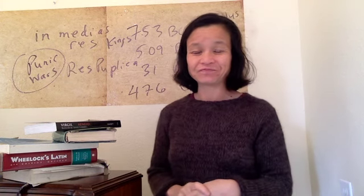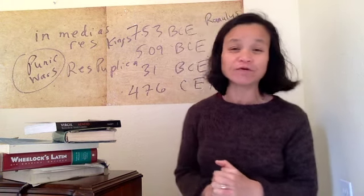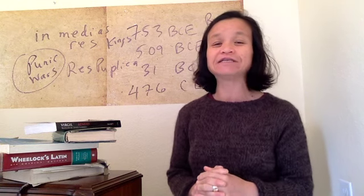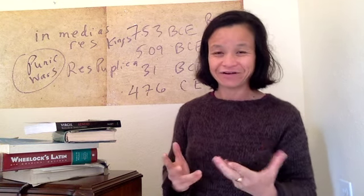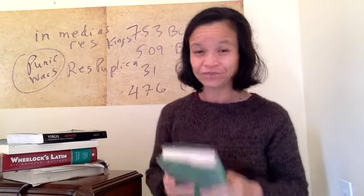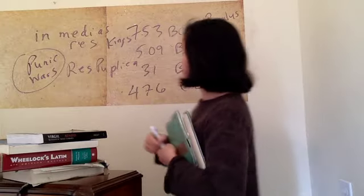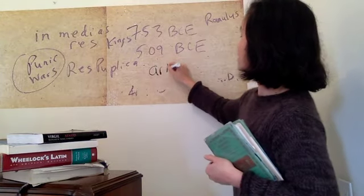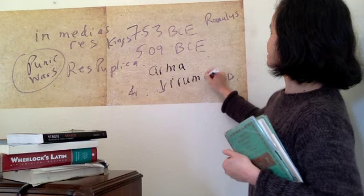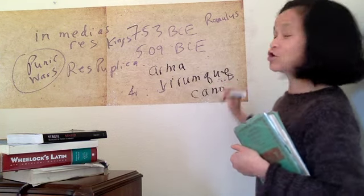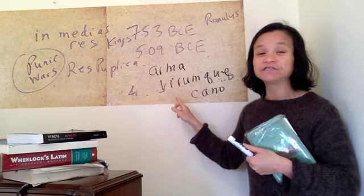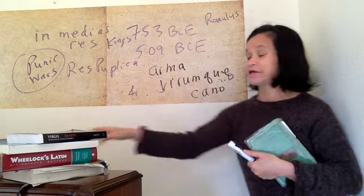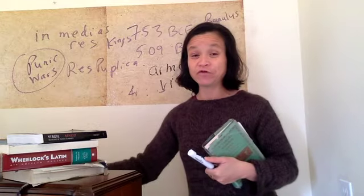The opening of the Aeneid is, Arma virumque cano... The opening of the Aeneid, arma means arms as in weapons, virum means the man as in Aeneas, cano is I sing, que is and. The Aeneid is a story about both of these things.